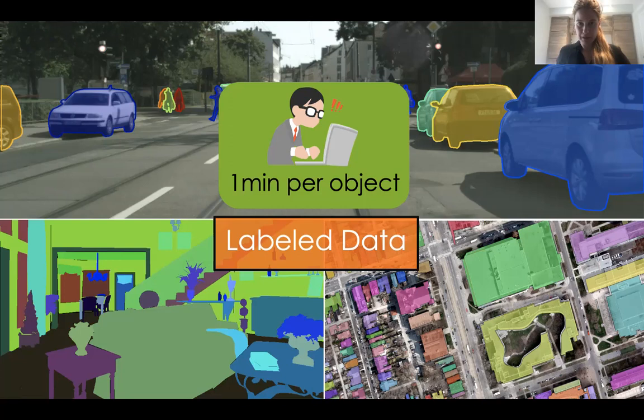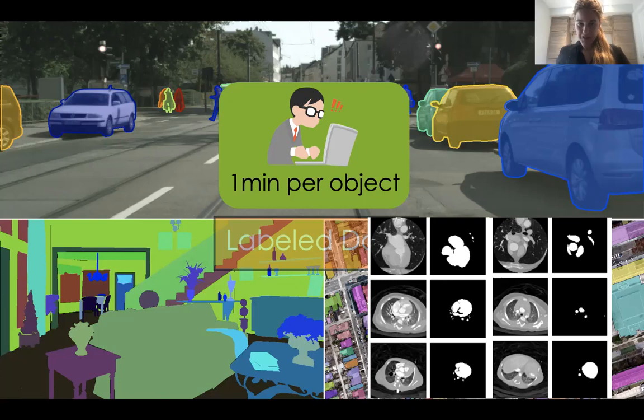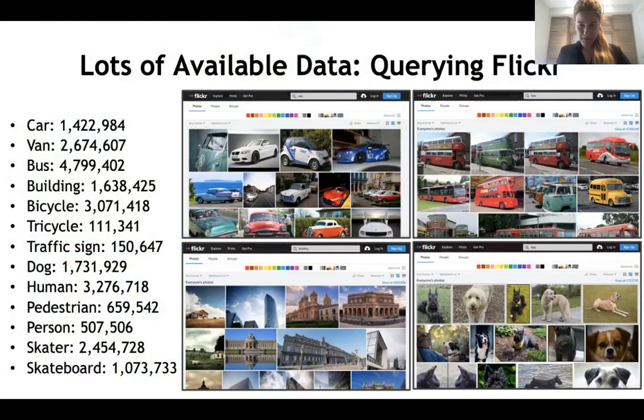The main issue is that label data is extremely expensive and slow to collect. It takes about one minute per polygon to annotate. This is especially time-consuming and expensive for domains such as medical imaging, because you need experts like doctors to annotate the data. But if we go online — for example, querying Flickr — there are tons of imagery available. Querying just the most common tags like car, van, bus, dog, the number of images for each class is in the millions. So we should be able to leverage this unlabeled data that is vastly available online.